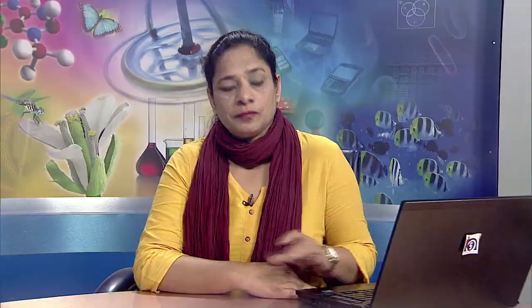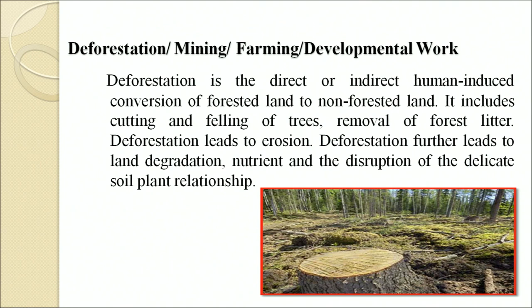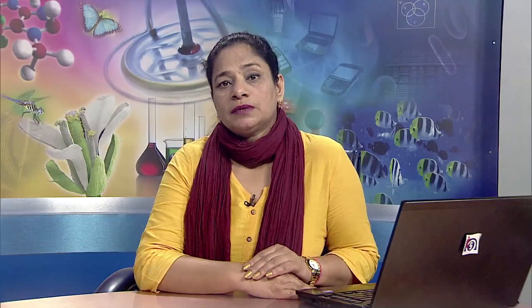Deforestation is the direct or indirect human-induced conversion of forested land to non-forested land. It includes cutting and felling of trees and removal of forest litter. Deforestation leads to erosion, land degradation, nutrient loss and disruption of the delicate soil-plant relationship. Agriculture is a major human activity that causes soil erosion. Crops are grown, harvested, land re-plowed and exposed to wind and rain intermittently, which prevents replenishment of moisture.